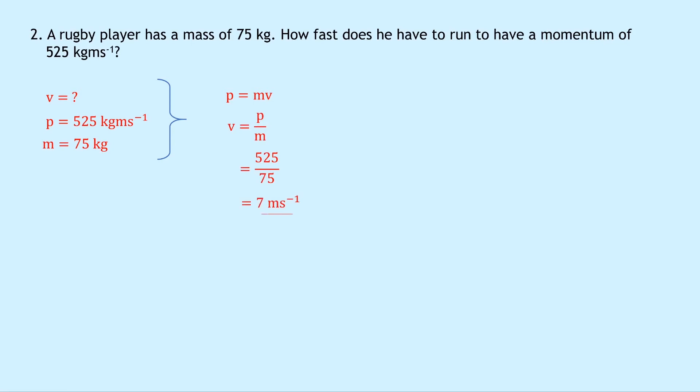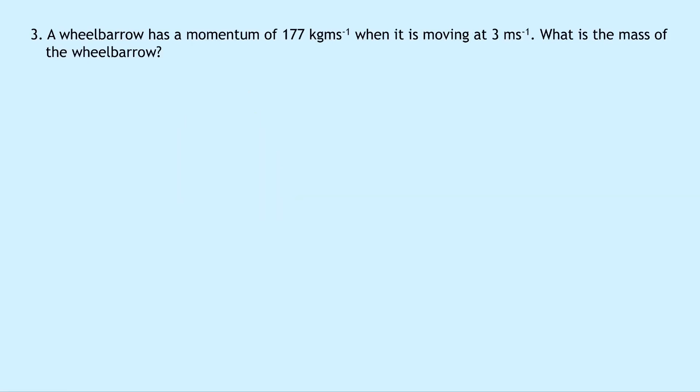Lastly, question three says that a wheelbarrow has a momentum of 177 kilogram meters per second when it is moving at 3 meters per second. What is the mass of the wheelbarrow?